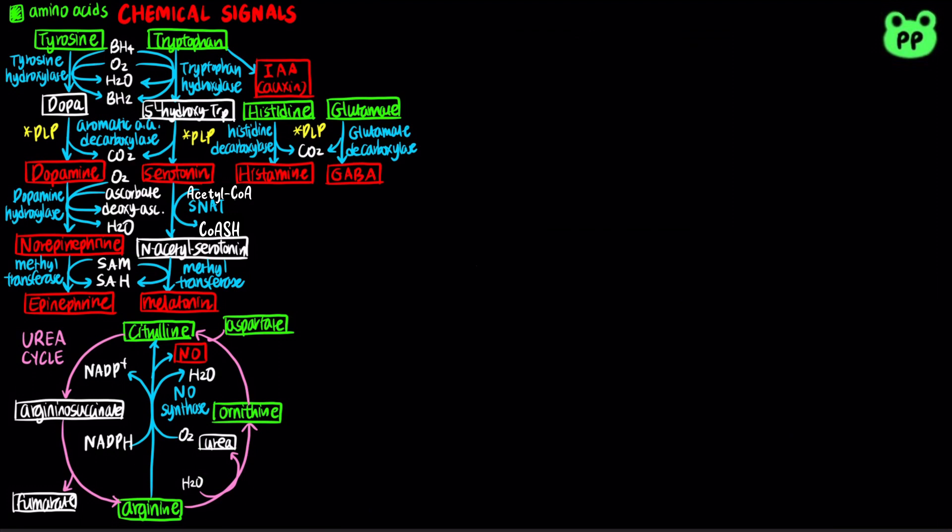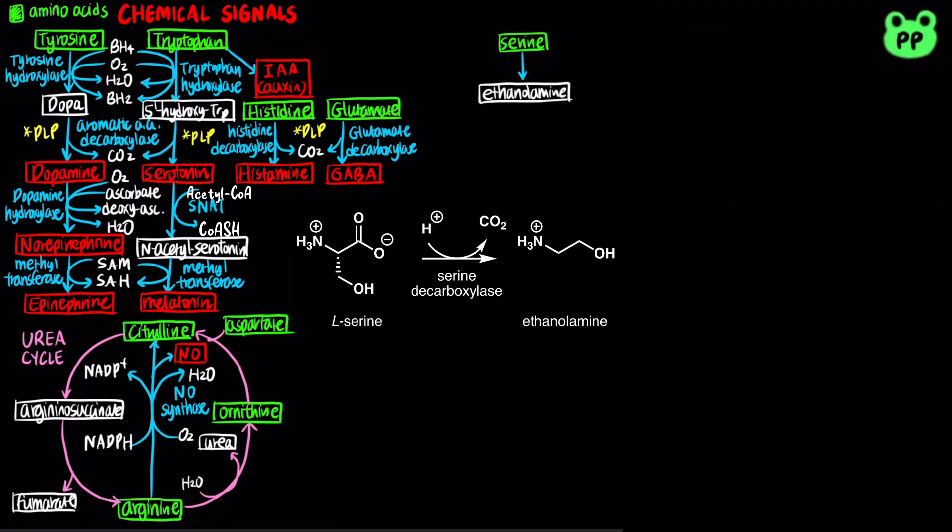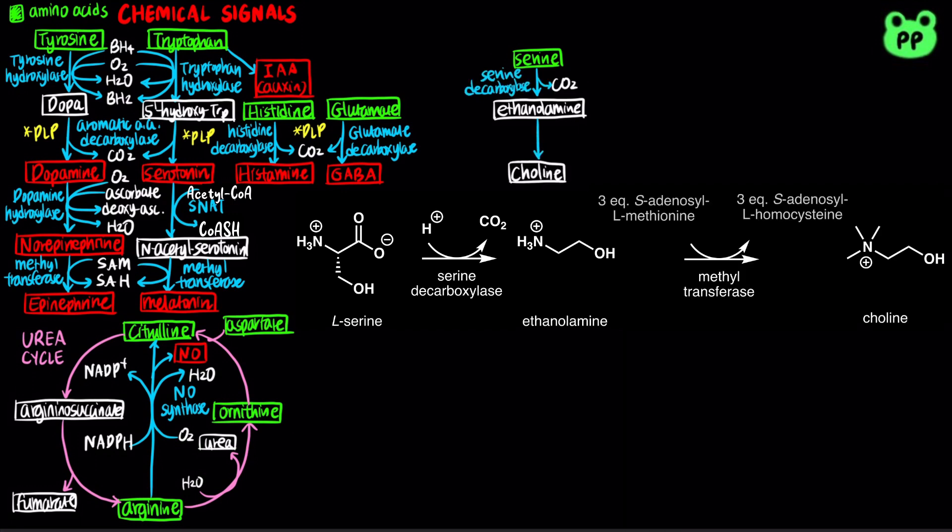Acetylcholine is derived from serine. First, serine decarboxylase converts serine to ethanolamine, which is subsequently converted to choline by three repeating steps of methyltransferases, with S-adenosylmethionine as the methyl donor.